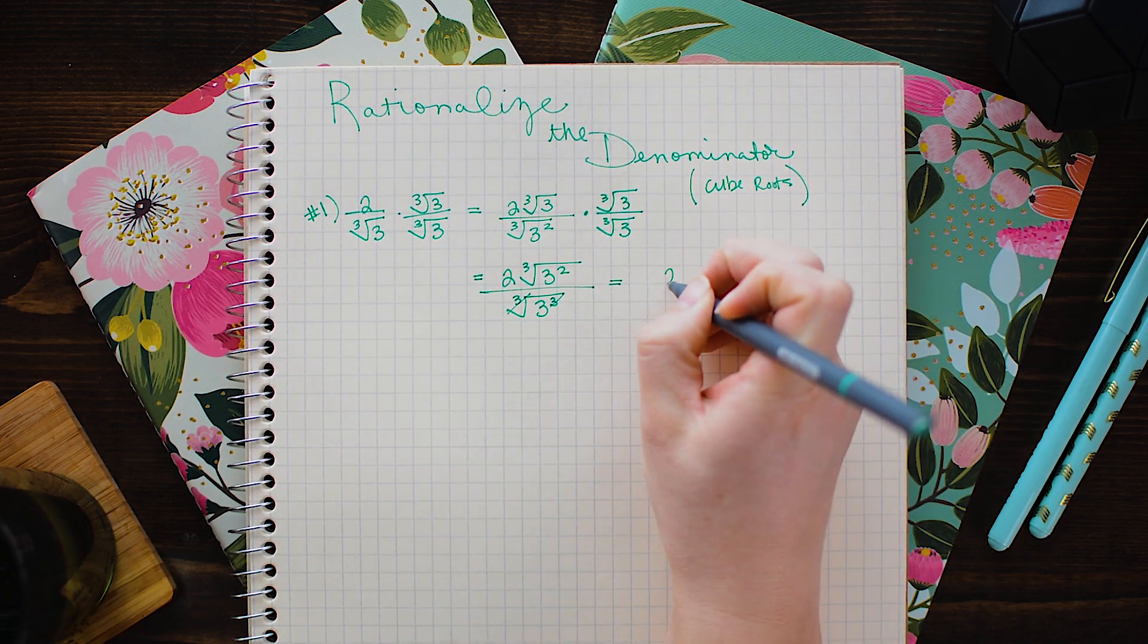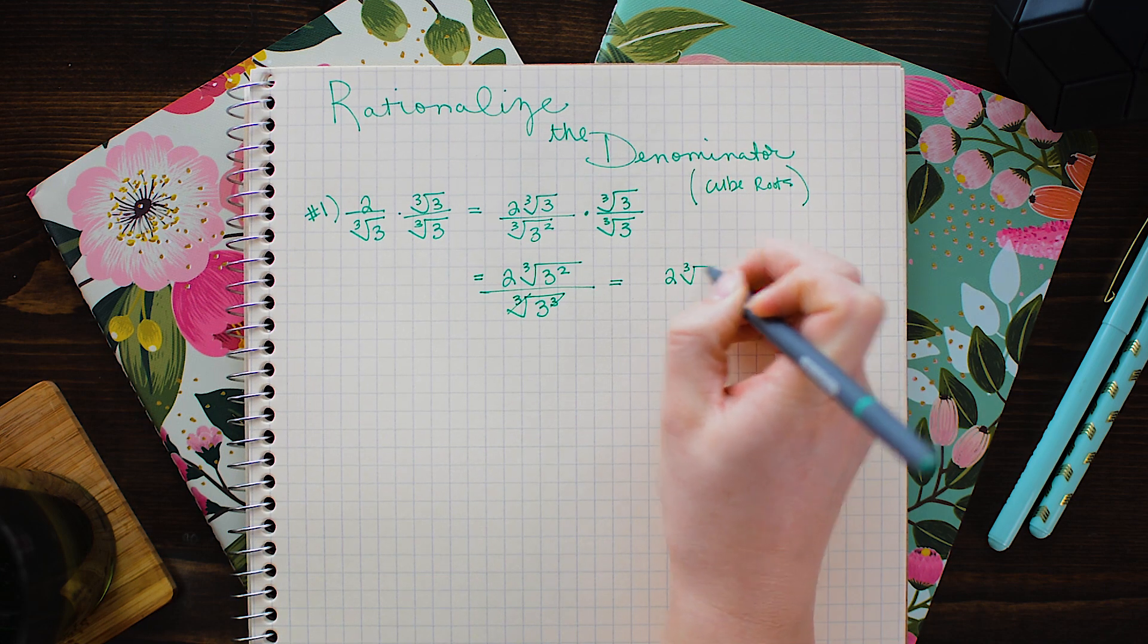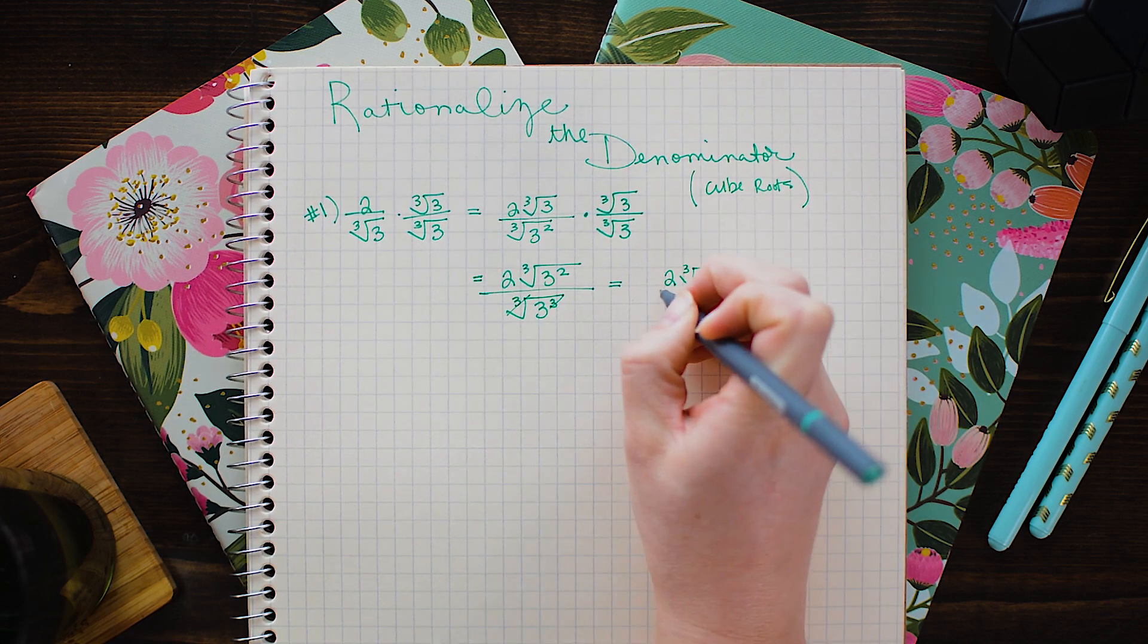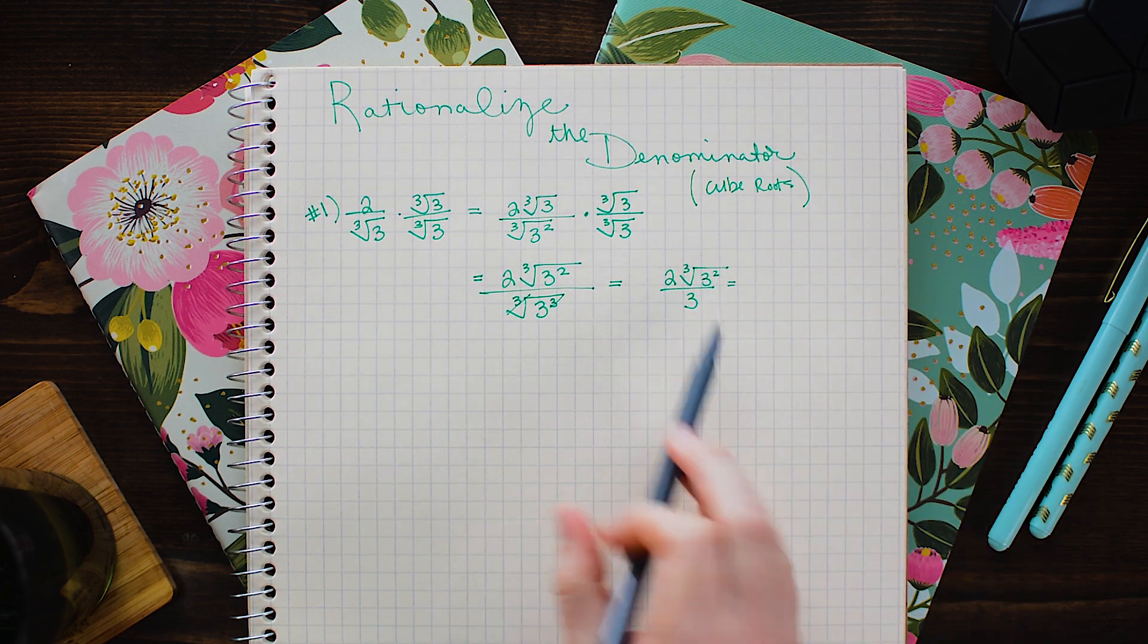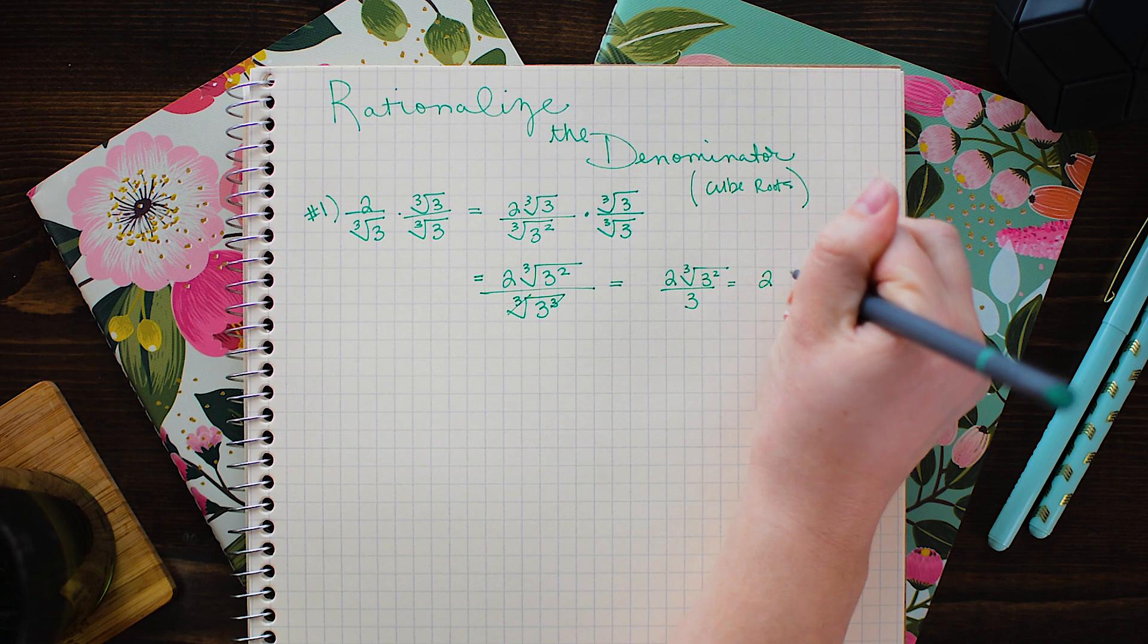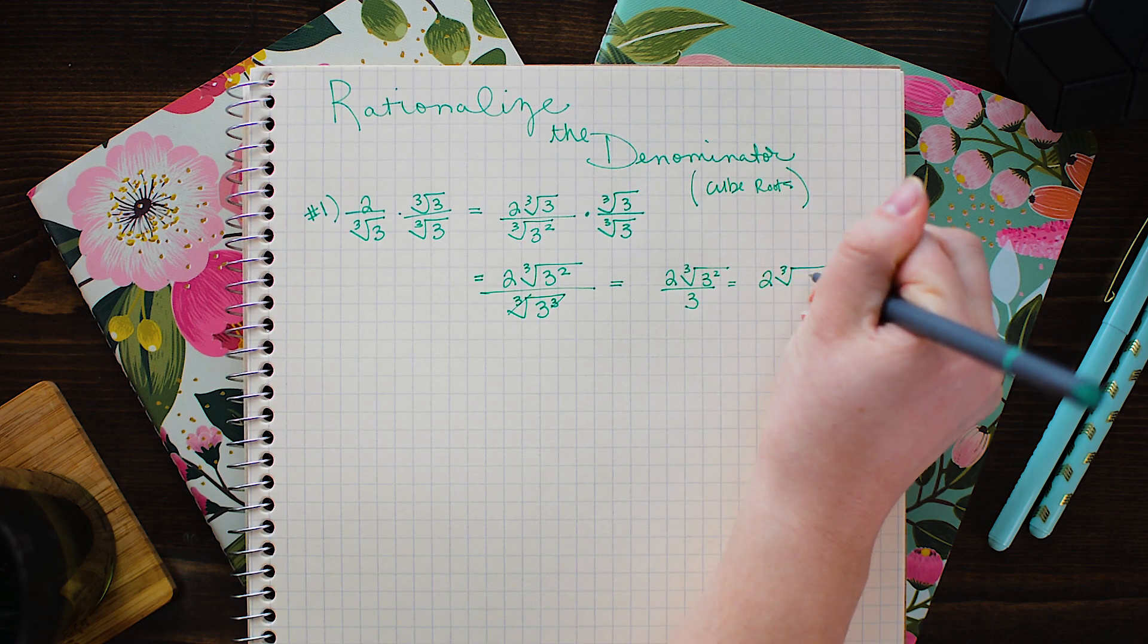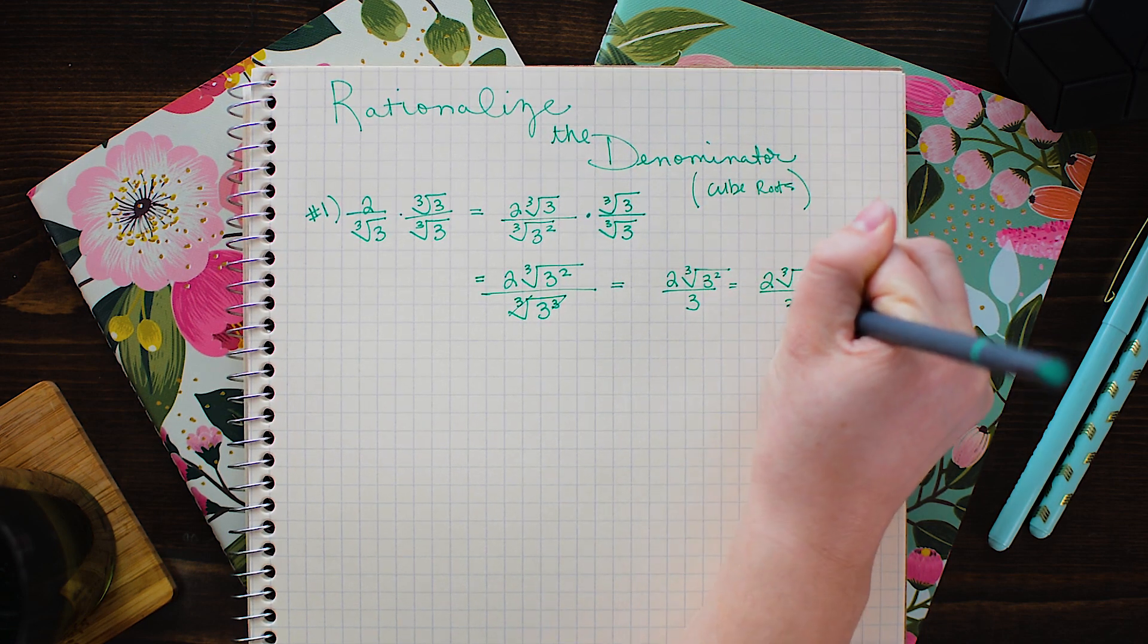So this becomes 2 cube root 3 squared over 3. We can go ahead and multiply out 3 squared and this is 2 cube root of 9 over 3.